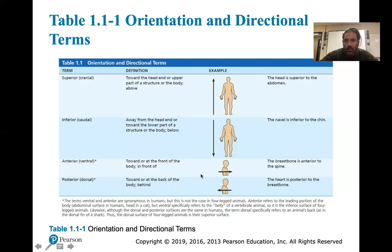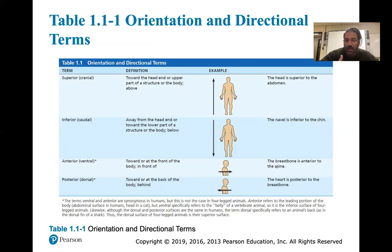Anterior is toward the front of the body — in medical terms it's usually called ventral. Posterior is always dorsal, toward the back. For example, the sternum is anterior to the spine, or superficial to the spine, meaning it's more toward the surface than the spine from the anterior view.